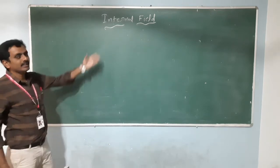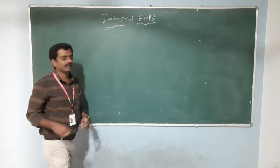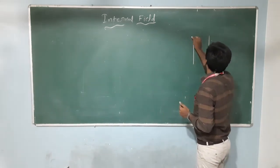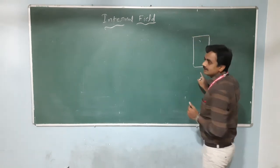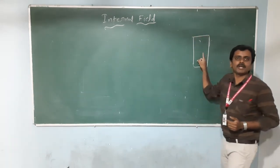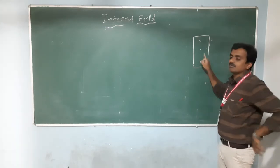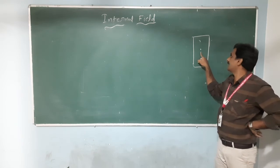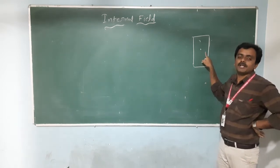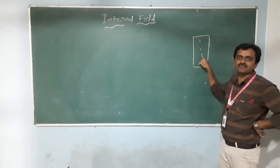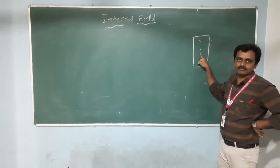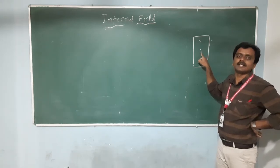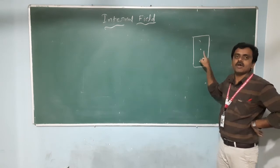Today I will discuss about the internal field. For explaining the internal field of a solid material — if you take any solid material — the internal field is: what are the total electric fields acting on an atom inside that material? That total field acting on the material is called the internal field, or local field, or local range field.